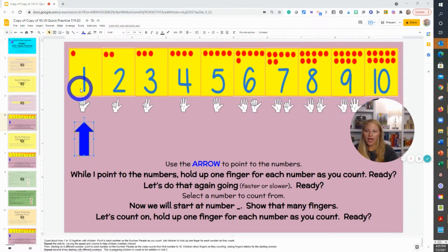So we have numbers one through ten, and the idea just for lesson one is to introduce this poster to students, called the number parade. We're going slowly through the numbers and showing the number of fingers for each one of the numerals. Boys and girls, while I point to the numbers, hold up one finger for each number as you count. Ready? One, two, three, four, five. We're just counting on our fingers.